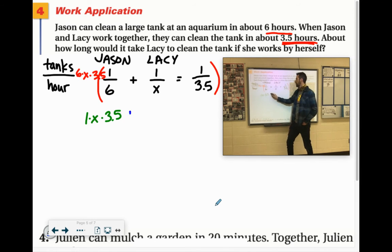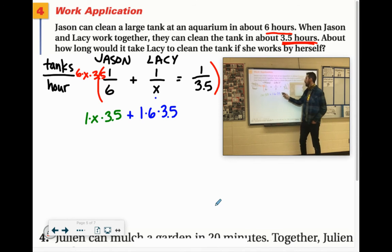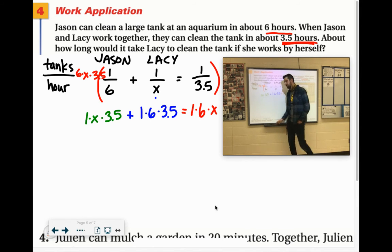The second fraction, the one, it has the X down there, so it also needs the six and the 3.5. And then this third fraction has the 3.5, but it's missing the six and the X. So I think initial setup is the toughest part on this one. But once you figure out how to set up these rate problems, they're all basically the same.